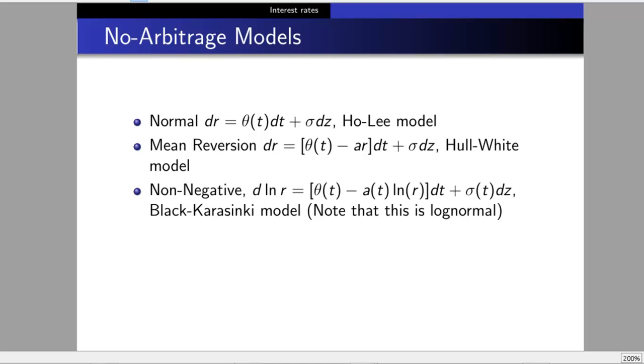Finally, the non-negative model: d(ln r) = [θ(t) - a(t)ln r]dt + σ(t)dz. We keep it positive using log r. Since ln r is never negative, this maintains positivity. This is lognormal because it's d(ln r). The noise term is normal, but taking the log of a normal distribution gives lognormal. This is the Black-Karasinski model.